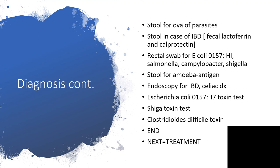E. coli O157 or H7 toxin test could also be done. You can have a Shiga toxin test, and Clostridioides difficile toxin (formerly Clostridium difficile) could also be assessed. With that, I've come to the end of symptoms and diagnosis of acute diarrhea. The next presentation will be entirely on treatment. Thanks for listening. Kindly subscribe to my channel so that you can get these presentations immediately when published. Thank you.